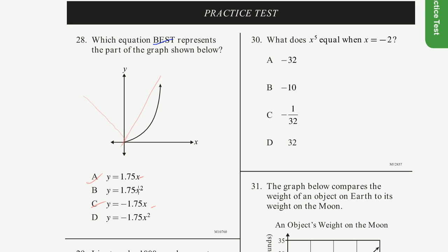Let's look at the remaining two — we could call them quadratics. We have 1.75x². The graph of x² looks like a parabola — you've seen that before — and they're just drawing it in the first quadrant.